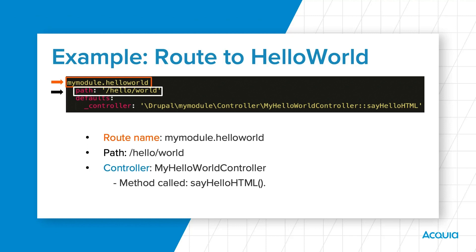For example, let's assume another module defines a route with a path of slash hello slash world slash earth. If the client sends a request for slash hello slash world, Drupal knows to execute the route defined in MyModule.HelloWorld because this path matches more specifically than the hello world slash earth path. This matters when you have variables in the route path, such as slash node slash one or slash node slash one slash edit. If a route match is not found, then a 404 response is given.